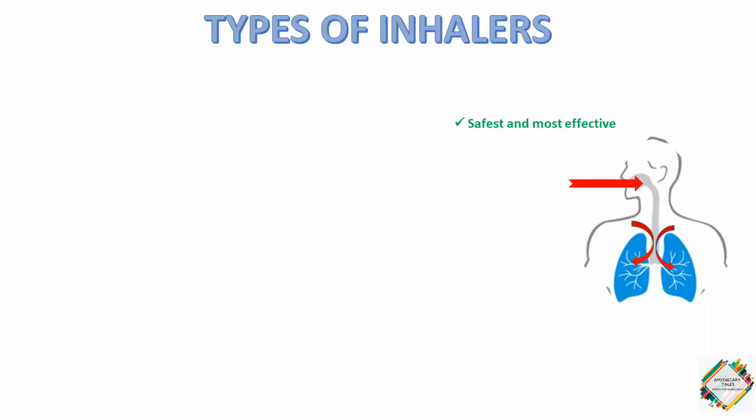Whereas if you take tablets and syrups, they first need to be ingested — reaching the stomach and bloodstream first and the lungs later — so they do not provide quick relief. Moreover, a large dose is required to produce the same effect as inhaler medication. Since inhaler medication reaches the problem area directly, the dose required is significantly lower than that of tablets and syrups.